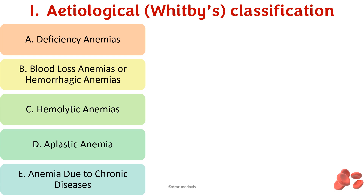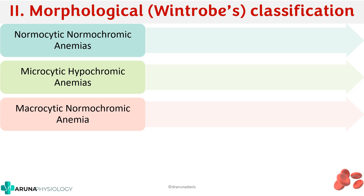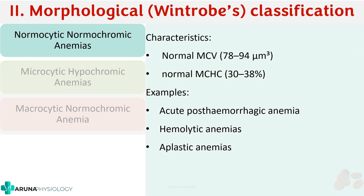For the morphological, or Wintrobe's, classification, the first type is normocytic normochromic anemia. The characteristic feature is a normal MCV — mean corpuscular volume — between 78 to 94, and a normal MCHC — mean corpuscular hemoglobin concentration. Examples include acute post-hemorrhagic anemia, hemolytic anemia, and aplastic anemia, in which the morphology of the RBC is normal.